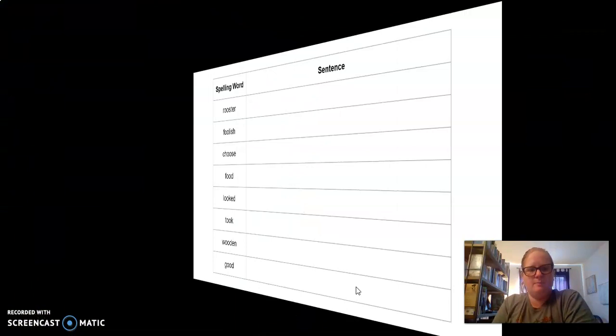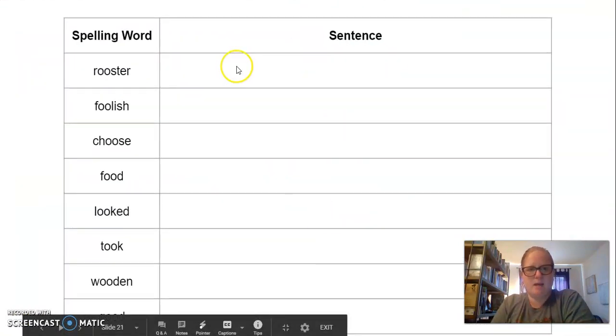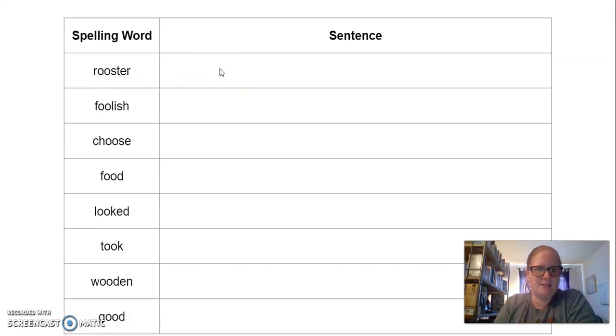Here, create sentences. For instance, a sentence that I would do for rooster would be, I have not seen a rooster in a very long time. Or something like that.